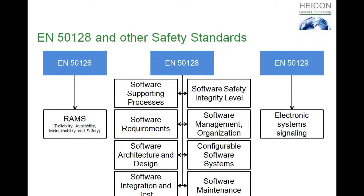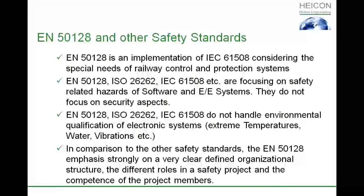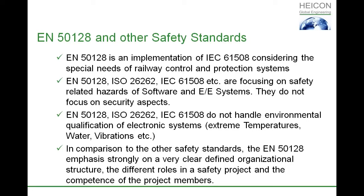Let us talk about EN 50128 and other safety standards and make a comparison of the most important points. The EN 50128 is an implementation of IEC 61508, considering the special needs of a railway control and protection system. You have seen the EN 50129 as a signaling system, which is also a bit of a difference. We have a few similarities between all of them, looking from a higher point of view.